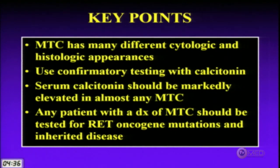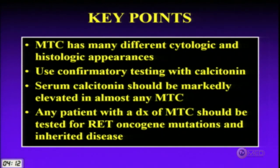Before making a definitive diagnosis of medullary cancer — given the clinical implications — always perform immunohistochemistry for calcitonin (strongly positive) or request a serum calcitonin from your clinician, which is almost always very high. In retrospect for the giant cell variant case, the smudgy nuclei, lack of necrosis, and lack of mitotic activity were not characteristic of anaplastic carcinoma, and the patient was relatively young at 45. Keep medullary in mind and you'll get the serum calcitonin.